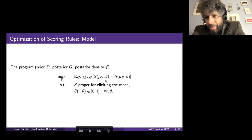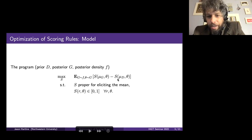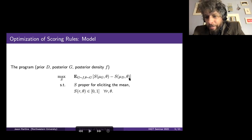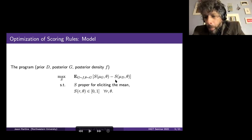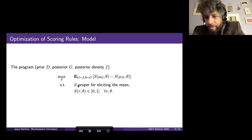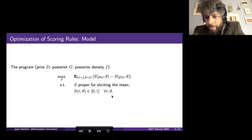The agent's objective: if they do no work, their belief about the mean is the prior mean, so they get a score according to reporting the prior mean. If they actually put in effort, they get a score according to the mean of the posterior G. The expected difference between these is the incentive for effort. The scoring rule should be proper for eliciting the mean and bounded — for all reports and states, it should not produce a score outside the range [0,1].